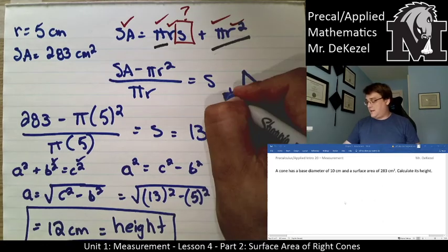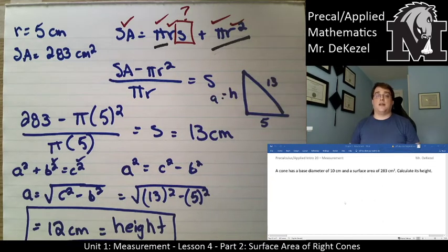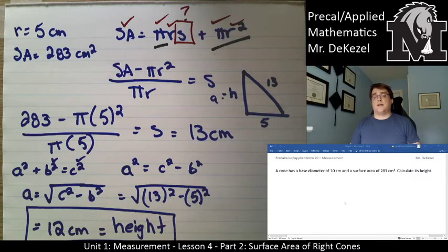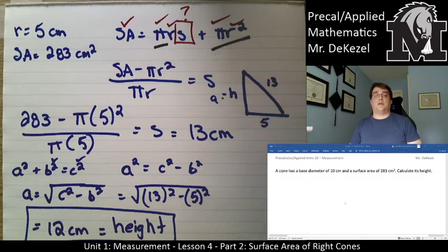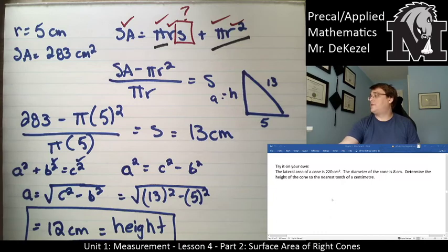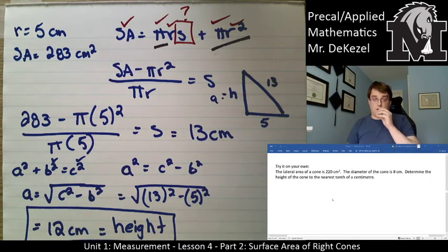We designated height as side a in the Pythagorean theorem and found the height of the cone to be 12 centimeters. We worked backwards: starting with surface area and radius, we found the slant height, then the actual height. It makes sense that the height is less than the slant height. If you get a height larger than the slant height, that's a sign something went wrong. Pause the video now and try the next one on your own.